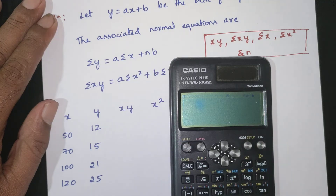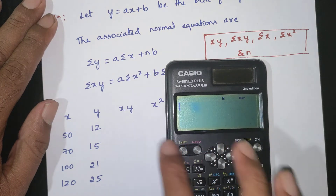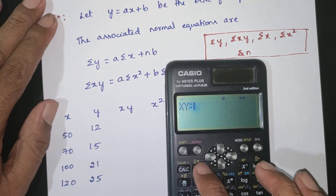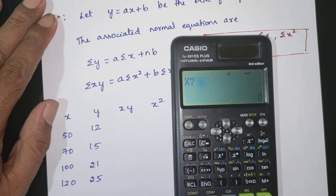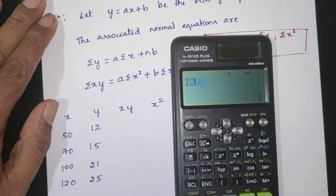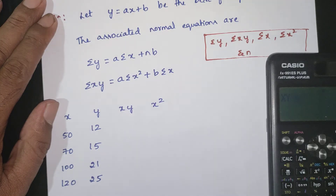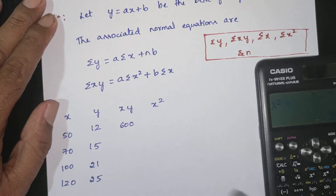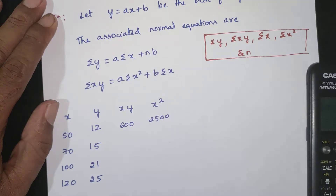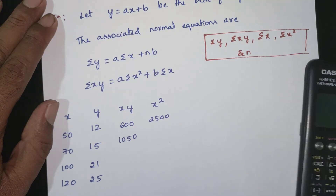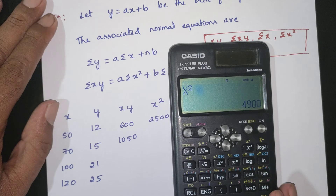Calculate summation of xy, summation of x, summation of y, summation of x squared. x = 50, y = 12, xy = 600, x² = 2500. x = 70, y = 15, xy = 1050, x² = 4900.